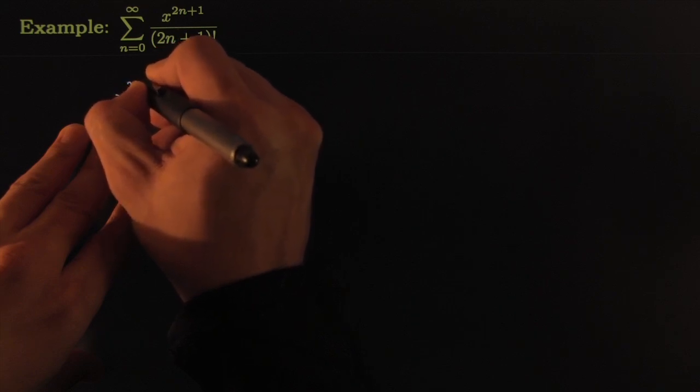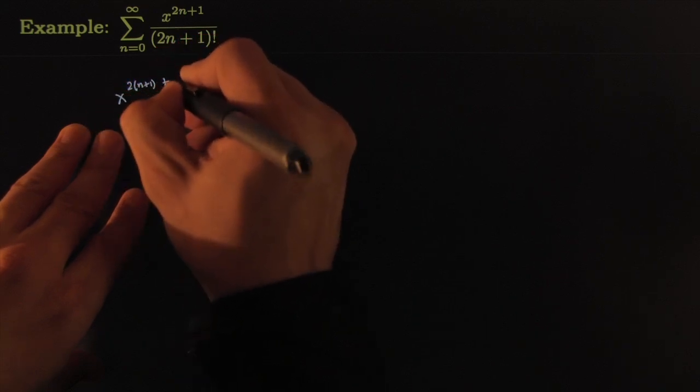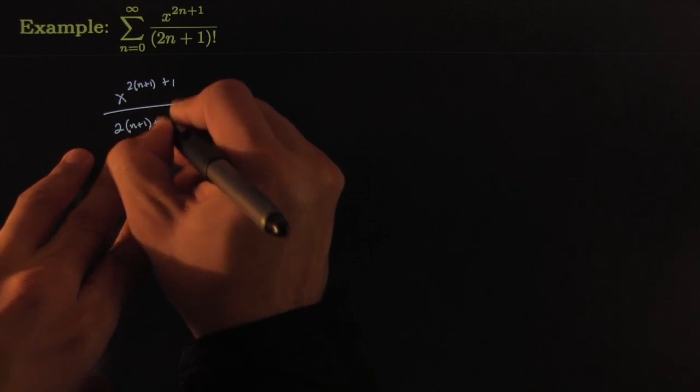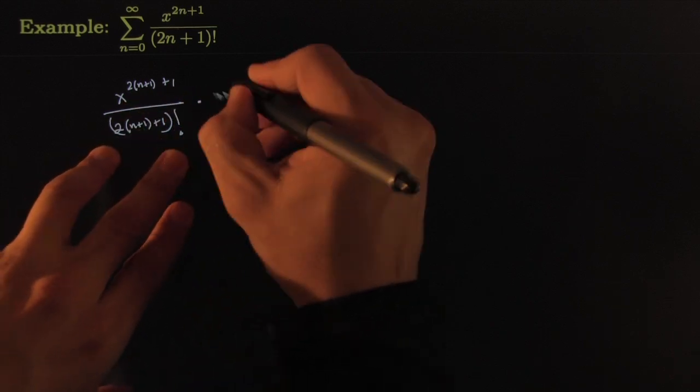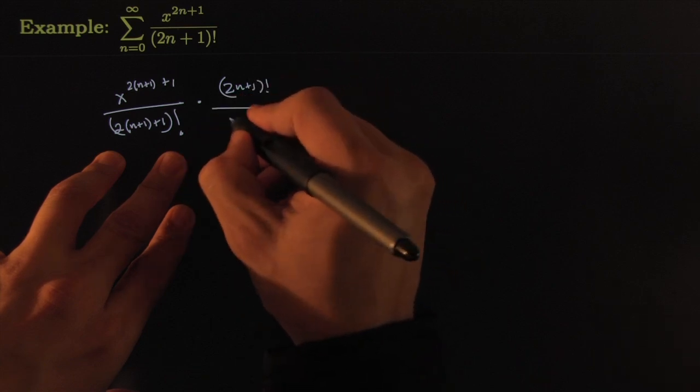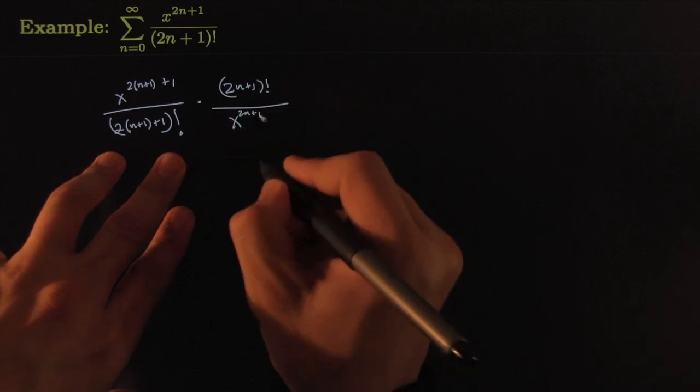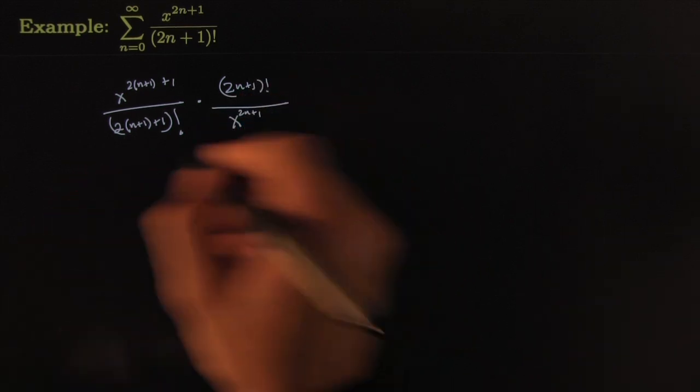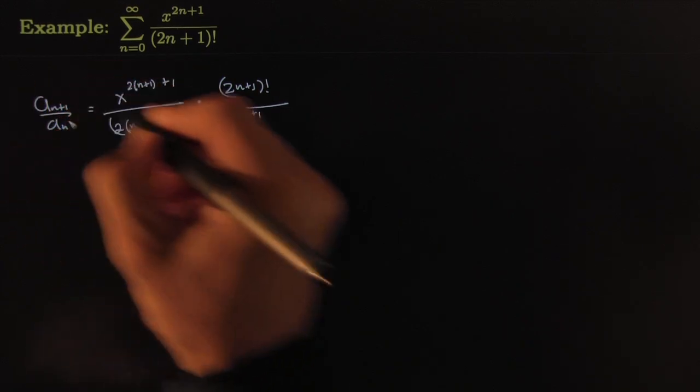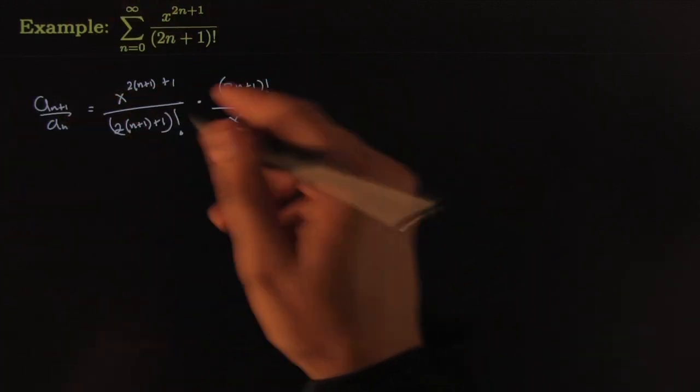So we'd have x to the 2 times n plus 1 plus 1 all over 2 times n plus 1 plus 1 factorial times 2 to the n plus 1 factorial all over x to the 2n plus 1. That's the ratio test where we've taken a_n+1 divided by a_n, and we flipped the bottom actually because it was a fraction.